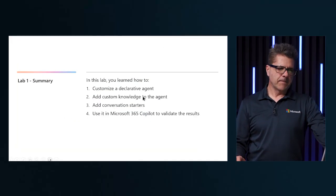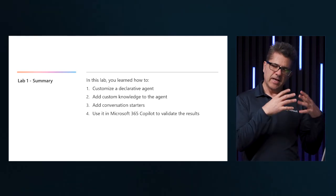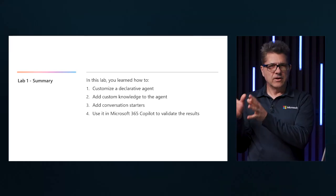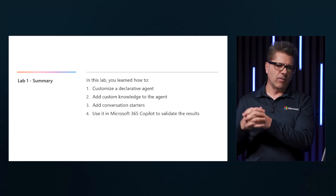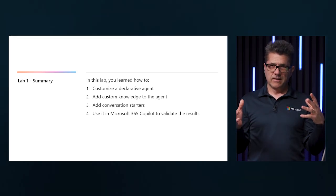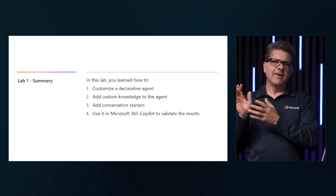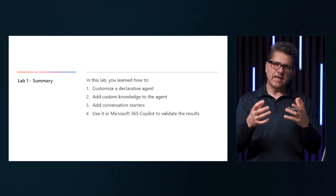Now that we completed exercise three, let's take a look at a summary of what we accomplished. First, we created a declarative agent. Second, we added knowledge to that agent — we specified that OneDrive is going to be the source of data, so all the reasoning and conversation will use those files in OneDrive. We also added a conversation starter — these are the prompt buttons for Copilot. When the customer clicks on them, it starts the conversation. As a result, we now have a working agent that can reason with data in OneDrive for a specific purpose. Next is lab two, where we are going to enhance this agent even more.